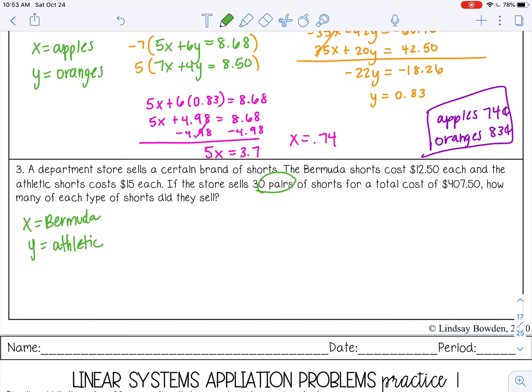They sold 30 pairs of shorts, but we don't know how many of each type they sold. So let's start there. We know that a certain amount of Bermuda shorts plus a certain amount of athletic shorts is a total of 30 pairs sold. And then we also know that Bermuda shorts cost $12.50 each, so $12.50 times x. And athletic shorts are $15 each, 15 times y. And since that's dealing with the cost, we want that to equal the total cost, which is $407.50. So those are our two equations.